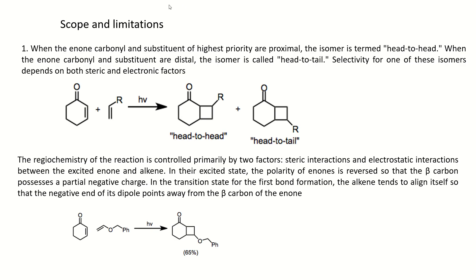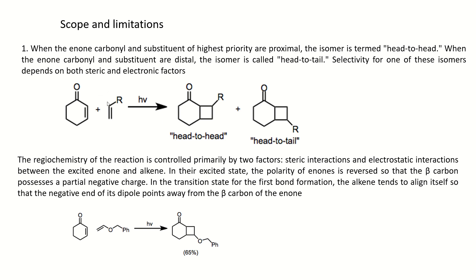The key aspect of forming different product isomers is the substituent position and nature of both the enone and alkene. For example, if the enone and alkene have substituents of highest priority in a proximal arrangement, then the isomer formed will be head-to-head. You can see that if both substituents of highest priority are proximal, their combination will be in head-to-head style, and this type of isomer will be the product.